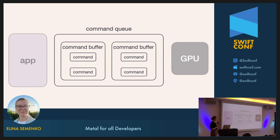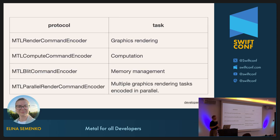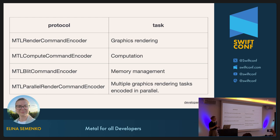Commands are encoded and enqueued in a command buffer. Once all commands are enqueued, the command buffer is committed and submitted to the command queue. Each command is executed in the order it was enqueued. You can choose what type of command encoder you need depending on the work: use the render command encoder for graphics rendering and textures, the compute command encoder for mathematical operations like matrix multiplication, the blit command encoder for memory management, and the parallel render encoder for parallel rendering.